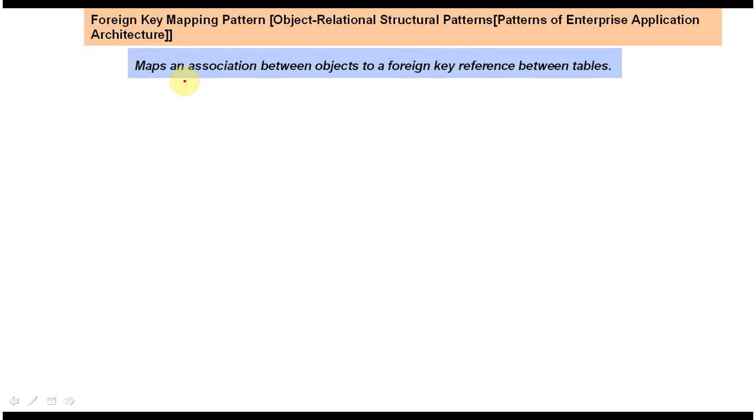We will see the definition. The definition maps an association between objects to the foreign key reference between tables. We will see one example so that you will understand this sentence, and we will come back to the sentence after I explain the examples.